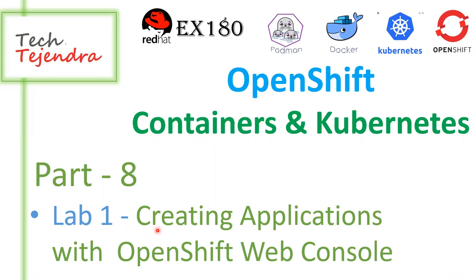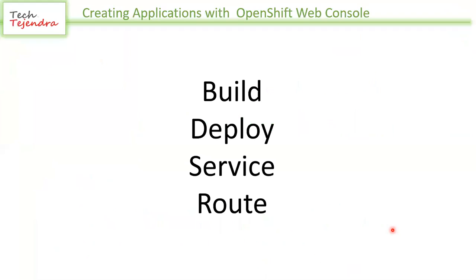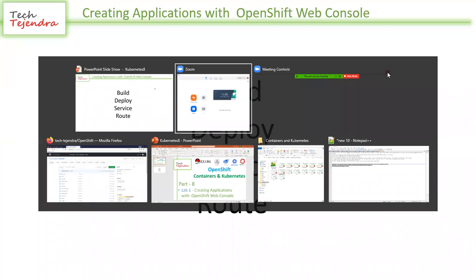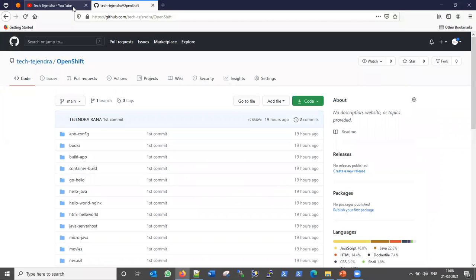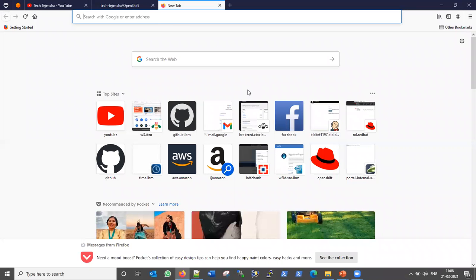We are focusing on the lab environment. In this first lab we will create an application using the OpenShift web console. The OpenShift web console is a very easy tool developed by OpenShift to create and manage your applications inside containers. I will show you how to build, deploy, create services, and create a route for your application using the OpenShift web console.